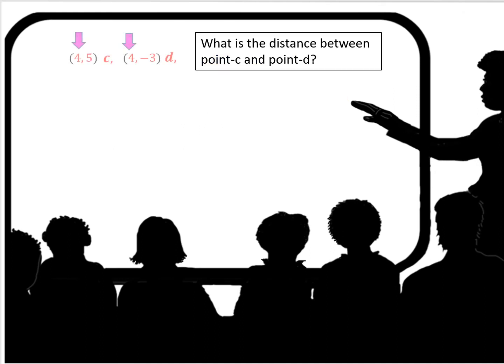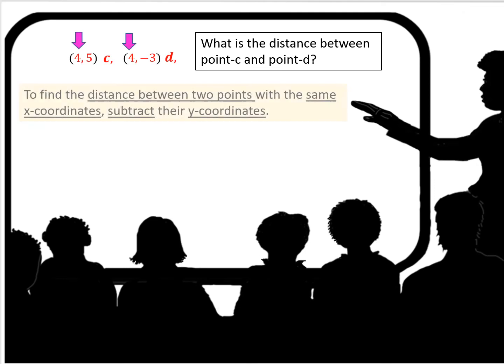What is the distance between point C and point D? So here are the coordinates for point C and point D. To find the distance between two points with the same x-coordinates, subtract their y-coordinates. So the y-coordinates would be 5 and minus 3. 5 minus minus 3 is 5 plus 3, which equals 8.